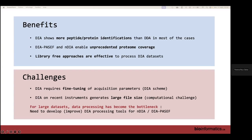As a summary: the benefits of DIA are that it shows more peptide and protein identifications than DDA in most cases; diaPASEF and nDIA on the Astral enable unprecedented proteome coverage; and library-free approaches are effective for processing DIA datasets. The challenges are that DIA requires fine-tuning of acquisition parameters, and DIA on recent instruments generates large file sizes — for large datasets, data processing has become the bottleneck, so we need to develop and improve DIA processing tools for these new acquisition methods.